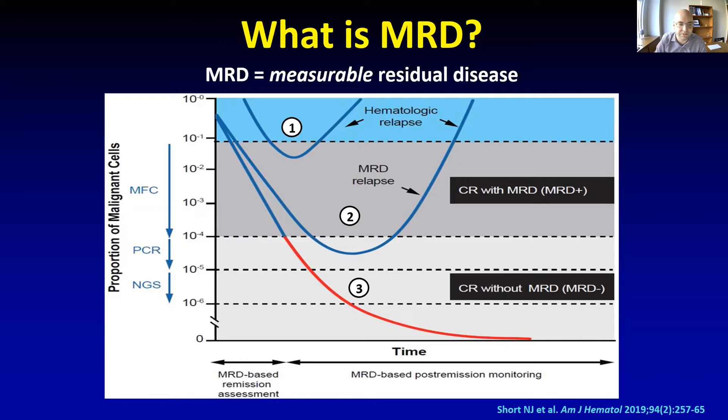For example, you can think of patient one who gets some type of therapy and achieves what would typically be called a complete remission, because when we look at the bone marrow there's a period of time where they're under that blue area — we would say this patient is in a remission. However, there's still residual disease that we can detect with these other assays, and unfortunately those patients will relapse unless we intervene, either with stem cell transplant or additional therapy.